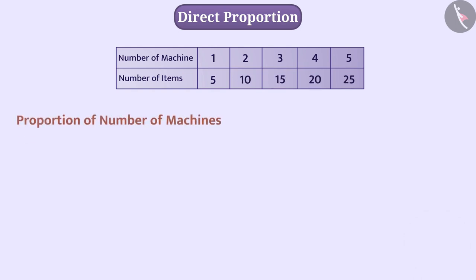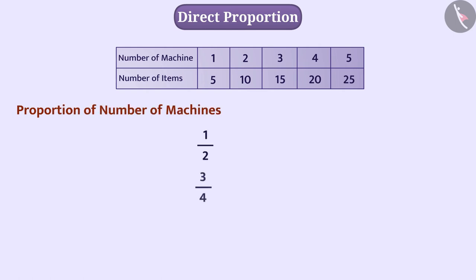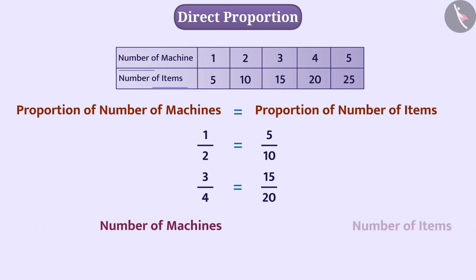Yes, here the proportion of the number of machines will increase or decrease in the same proportion. The number of items will also increase or decrease. Therefore, we can say that the number of machines and the number of items is directly proportional to it.